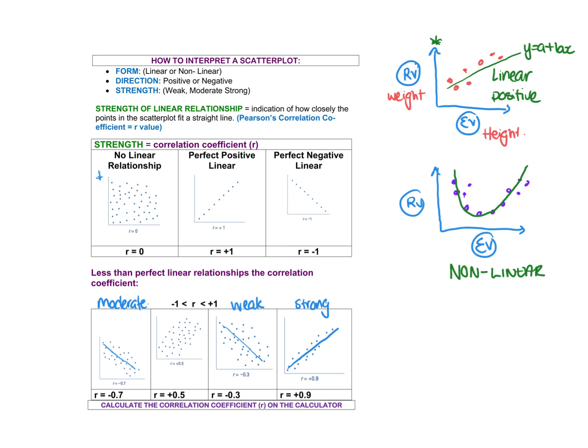Just talking about direction for these bottom examples: the first one is negative — good. The next one is positive, and I'd probably say that's weak or moderate. The one we've labelled weak is negative, and the one we've labelled strong is positive.